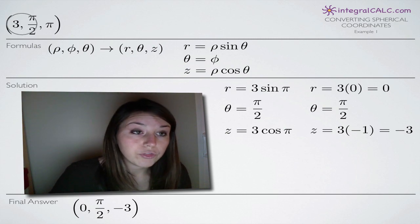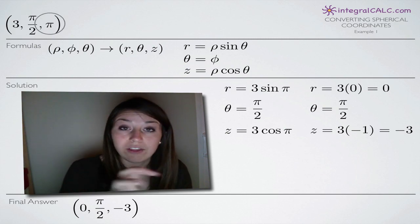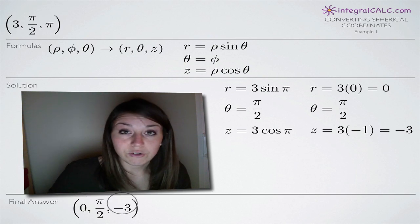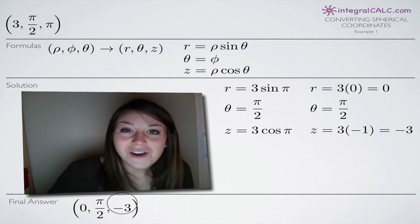So we've successfully converted (3, π/2, π) in spherical coordinate form to (0, π/2, -3) in cylindrical coordinate form. I hope that video helped you guys, and I'll see you in the next one. Bye!